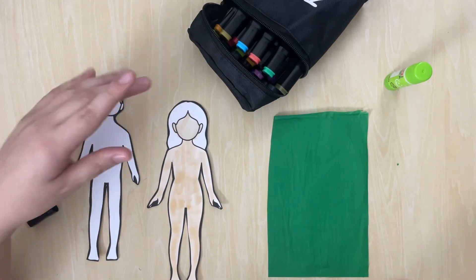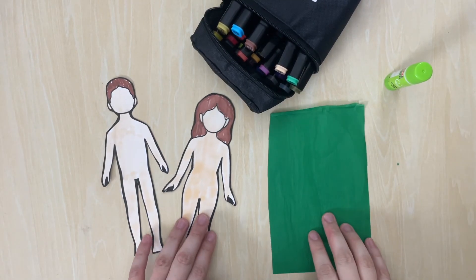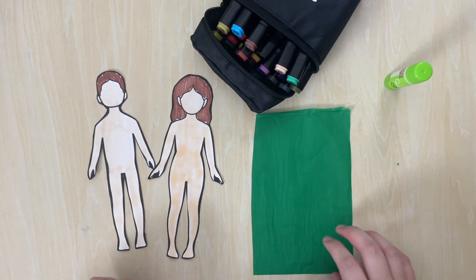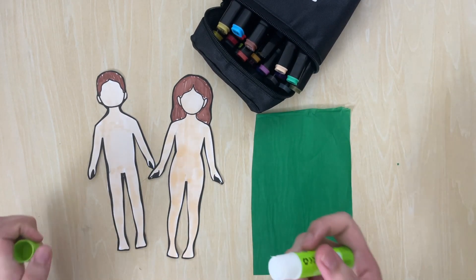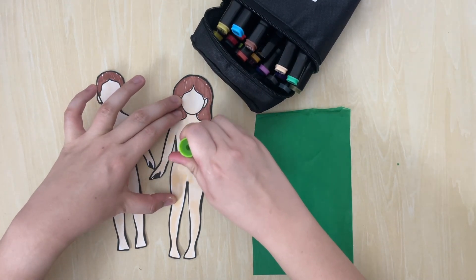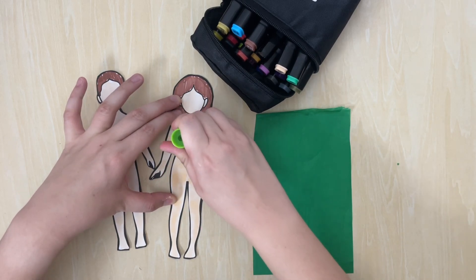Now all the kids have to do is to color their paper dolls. So I used flesh tones and brown hair. And once you're done, grab your glue stick, put some glue on the bodies of the paper dolls or the areas that you want to cover.